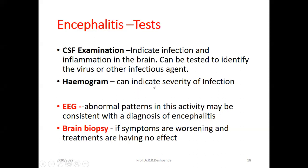A blood chemogram can also indicate the severity of infection — for example, WBC count normally 4,000 to 11,000 per cubic mm, but if it is more than 25,000 to 40,000, that indicates very serious infection. An electroencephalogram (EEG) will show abnormal patterns in brain activity consistent with a diagnosis of encephalitis. Very rarely, a brain biopsy can be done if symptoms are worsening and treatments are having no effect.